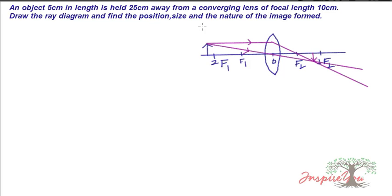We need to find the position, size, and nature using the ray diagram. The convex lens has a focal length of 10 centimeters, so twice f is 20 centimeters. The object is placed at 25 centimeters, which is beyond twice f. So the object is placed beyond 2f, meaning the image will form between f and 2f on the other side.